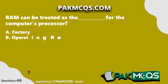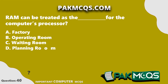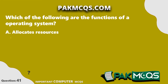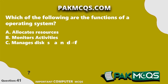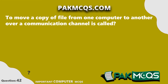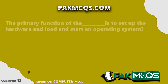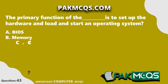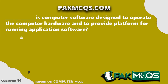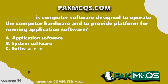RAM can be treated as the waiting room for the computer's processor. An operating system performs all of these functions. To move a copy of a file from one computer to another over a communication channel is called file transfer. The primary function of the BIOS is to set up the hardware and load and start an operating system. System software is computer software designed to operate the computer hardware and provide a platform for running application software.